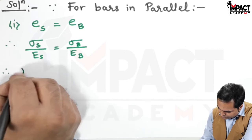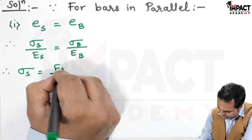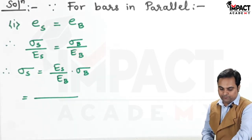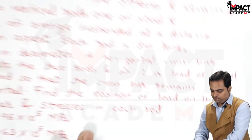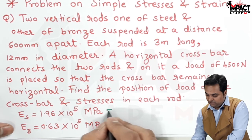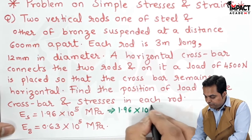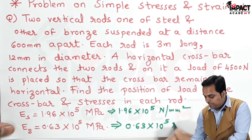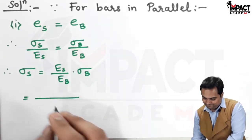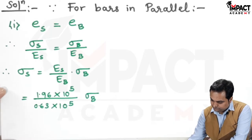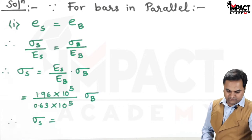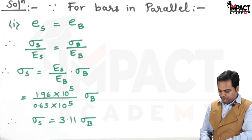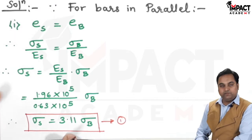From Hooke's law, E_s is shifted to the other side, giving σ_s = σ_b × (E_s / E_b). The Young's modulus values given in the problem are: for steel, E_s = 1.96 × 10⁵ MPa (N/mm²), and for bronze, E_b = 0.63 × 10⁵ N/mm². Substituting these values, σ_s comes out to be 3.11 × σ_b. This is Equation 1 — the stress in steel is 3.11 times the stress in bronze.